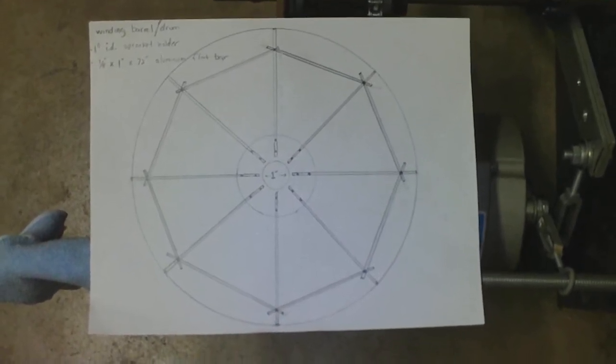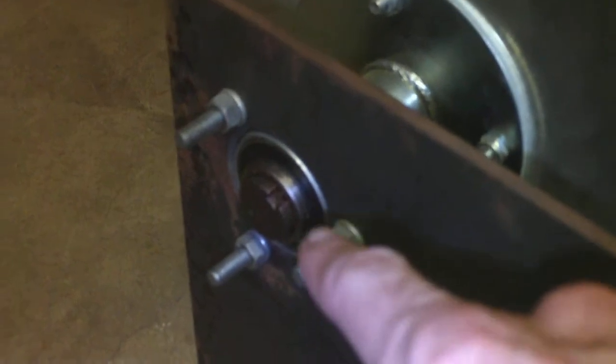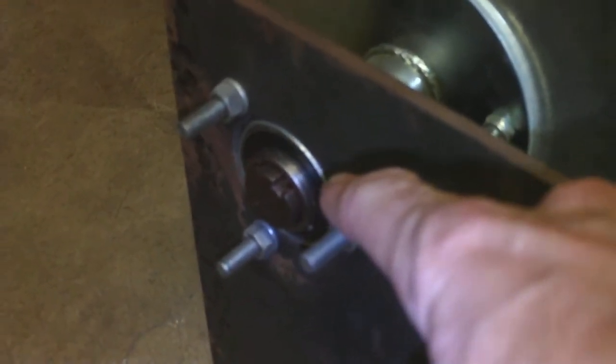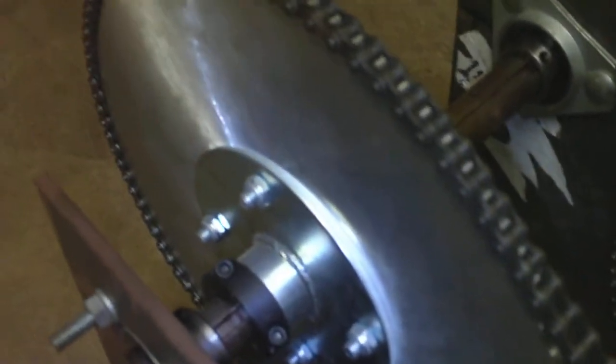And then, of course, in the middle, we're going to use the same thing we're already using, which will be bearings, you know, just like the one you're seeing there. Right? Just a bearing going through the hole and a jack shaft going through the middle of that big wheel.